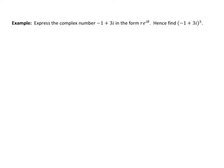The next example is kind of neat because it shows you something about DeMoivre's theorem and what we understand about powers already. I'd like us to express the complex number negative 1 plus 3i in the form r·e to the i·theta, and then hence find negative 1 plus 3i raised to the fifth power. Your process is going to be to convert it to polar form, find the modulus and the argument, and then put that into r·e to the i·theta. Pause the video and work through this.